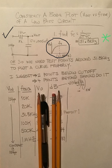So we need test points around 31.8 kilohertz to plot the curve properly. I'm not going to go crazy. I'm going to suggest to the left of the cutoff frequency, we'll do a measly two points, and beyond that where the slope drops, we'll do four points. And the frequencies are really up to me, but I'm going to pick nice values like 10k, 20k, 31.8k, 100k, 500k, and by the time a megahertz comes, we'll have our curve.